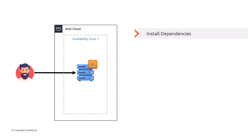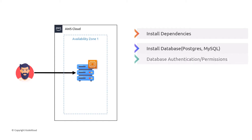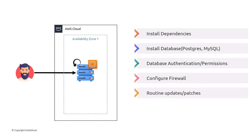You're going to have to install all the necessary dependencies that your database needs, then install the database itself — whether that's Postgres or MySQL. Then you're going to have to set up all of the authentication and permissions. You'll also have to configure a firewall so that you only allow the proper ports and don't allow any unnecessary connections that could compromise your database. And over the course of the lifetime of your database, you're going to have to perform routine updates and patches to your server as vulnerabilities pop up over time.